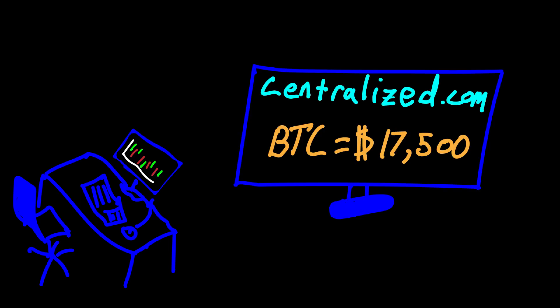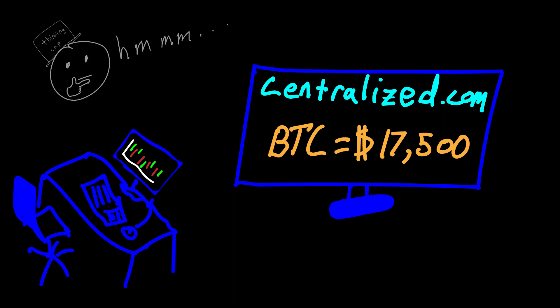One day, you're looking at a chart on a centralized exchange and you see that Bitcoin is $17,500 and you consider buying a whole Bitcoin. But before you buy from a centralized exchange, you decide to check out a decentralized protocol to see if they have a lower trade fee.